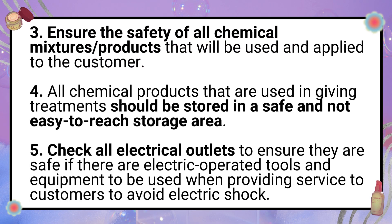OSH Practice 3: Ensure the safety of all chemical mixtures and products that will be used and applied to the customer. Checking that chemicals are used correctly prevents accidents like burns, irritation, or poisoning. Staff must follow instructions, use proper measurements, and wear protective gear to make the salon a safe place for both employees and clients.